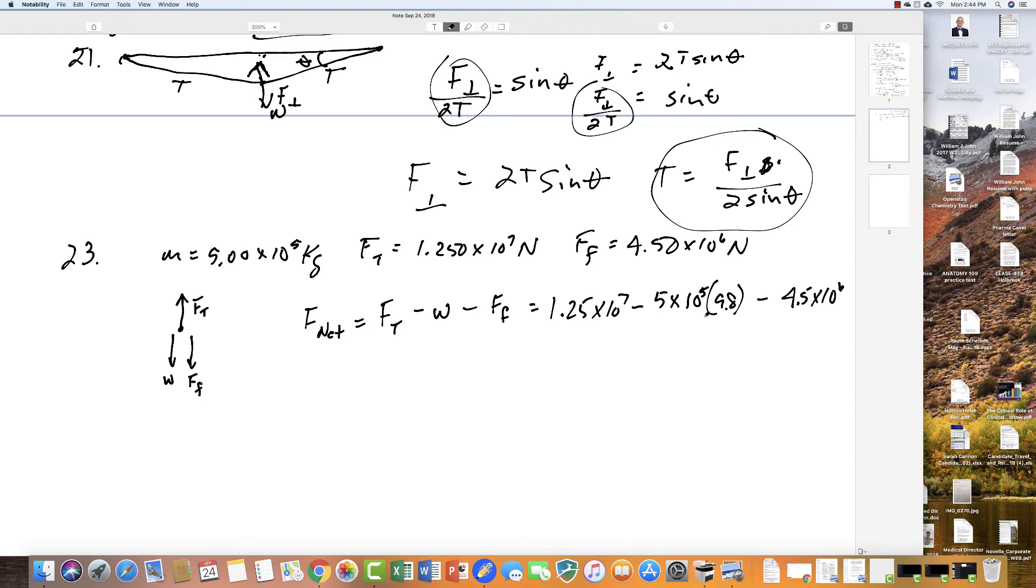If you do all the math here, you end up with, now that's F net, but then F net also equals MA. So A is going to be all of this divided by the mass, which is 5.00 times 10 to the fifth. And so if you do this calculation, A is 6.20 meters per second squared. Again, it's absolutely critical that you do the free body diagram when you do this.